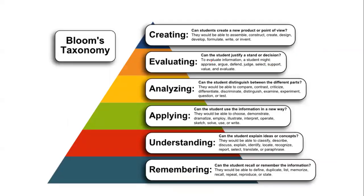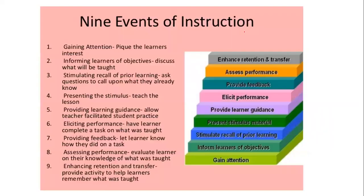To summarize Bloom's Taxonomy: Remembering — student can recall and define information; Understanding — student can explain; Applying — student can use information in a new way; Analyzing — student can distinguish between different parts; Evaluating — student can justify a stand or decision; Creating — student can create a new point of view.